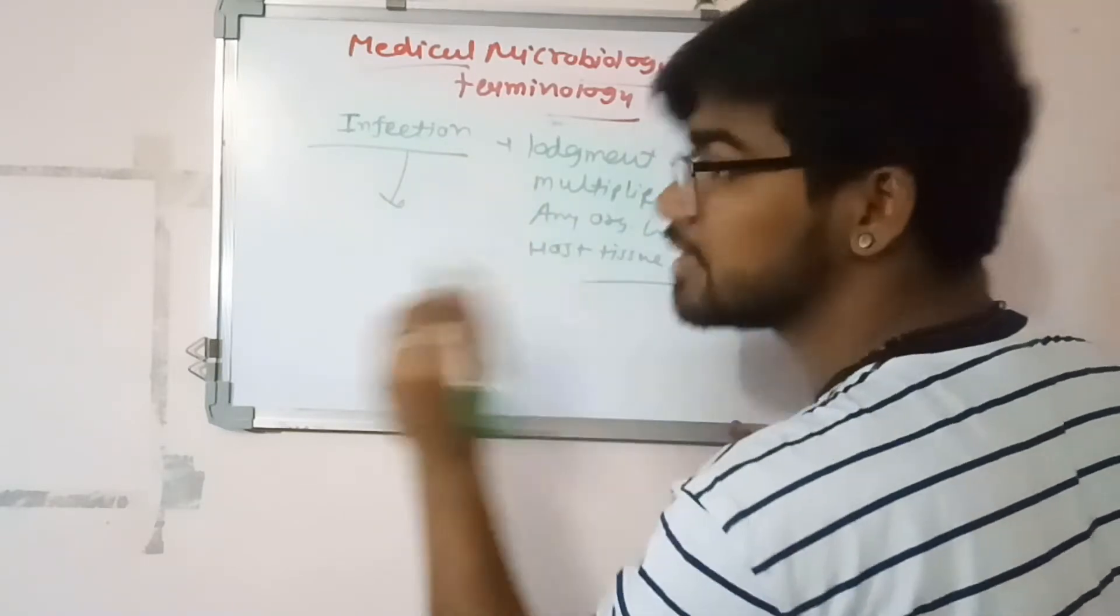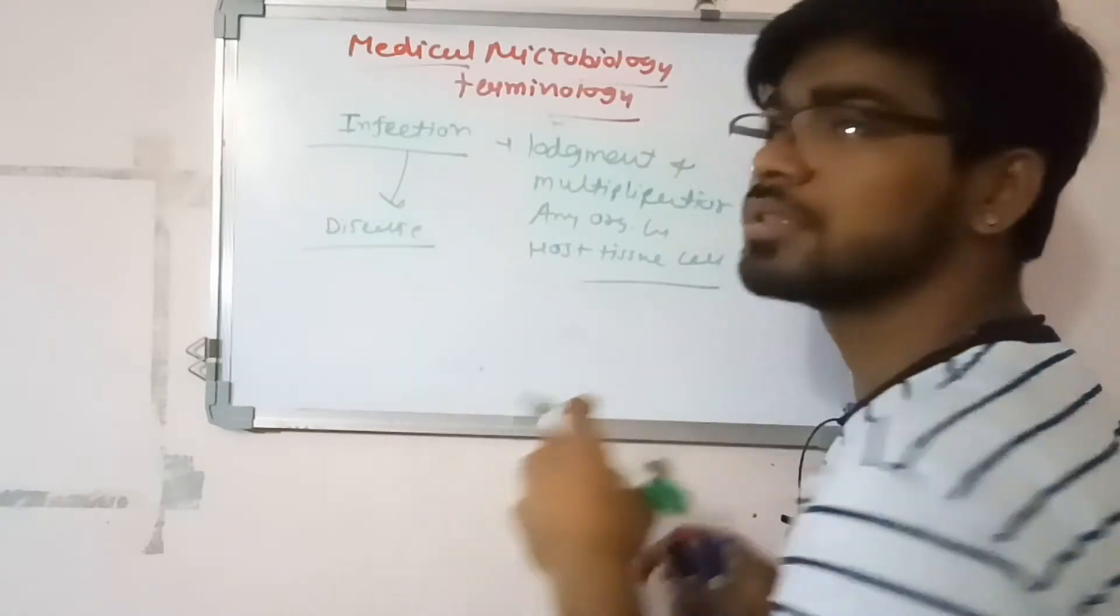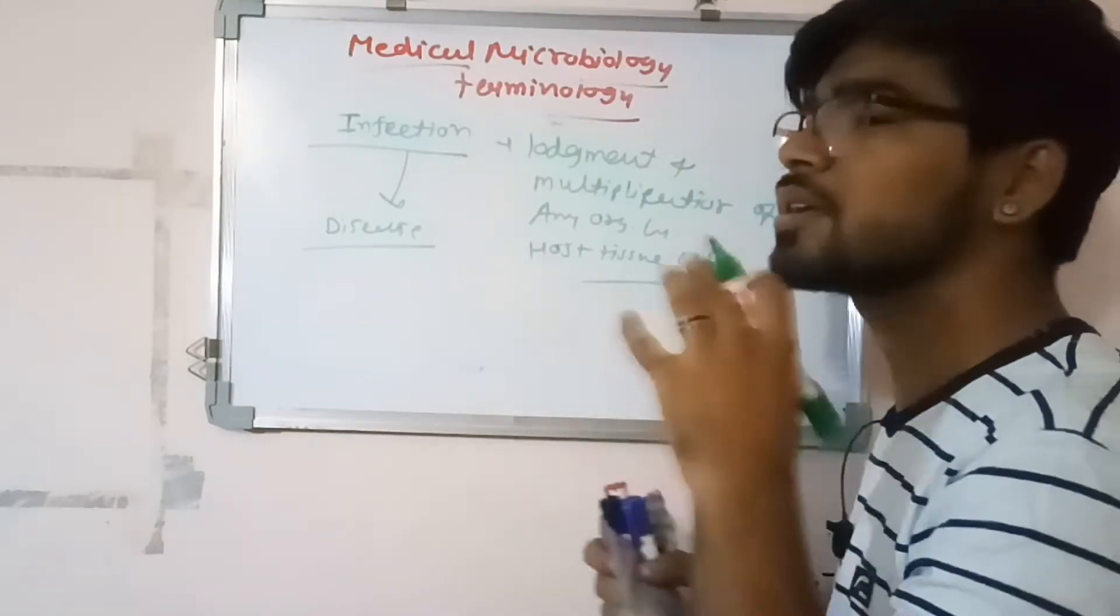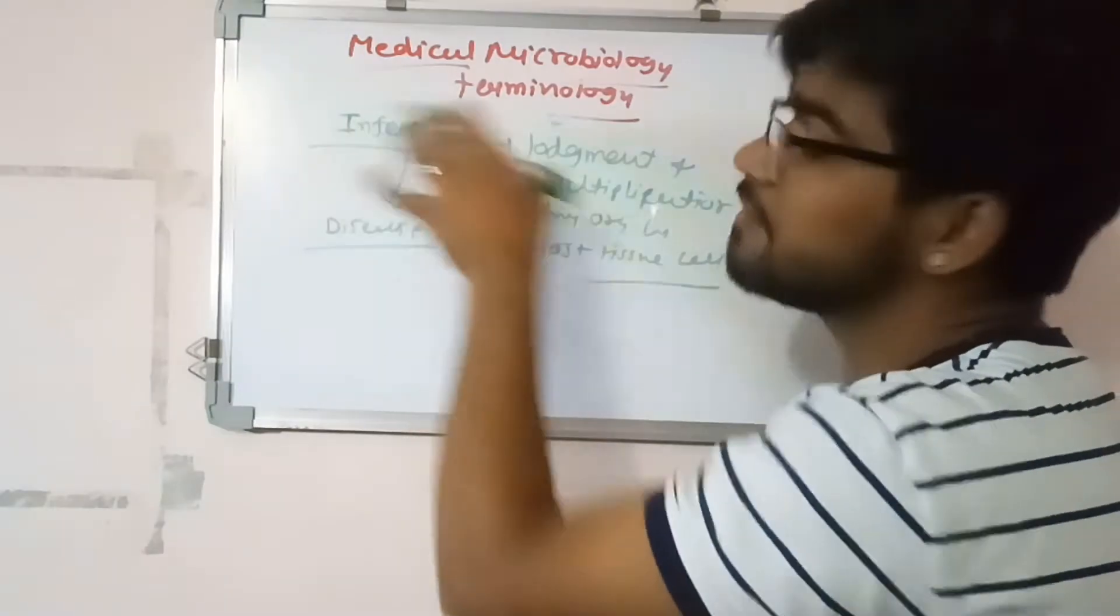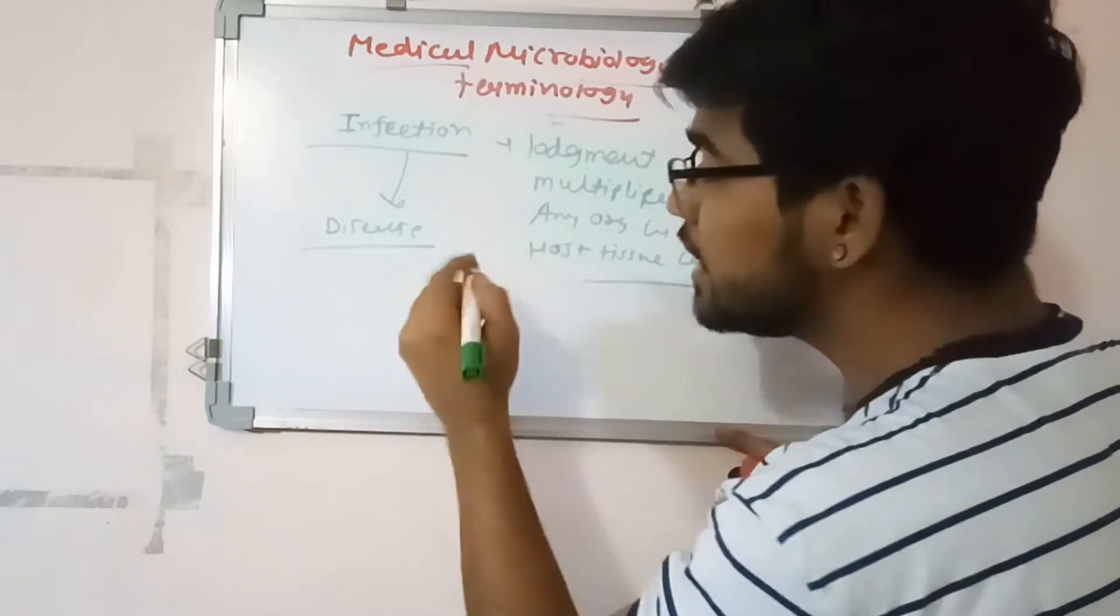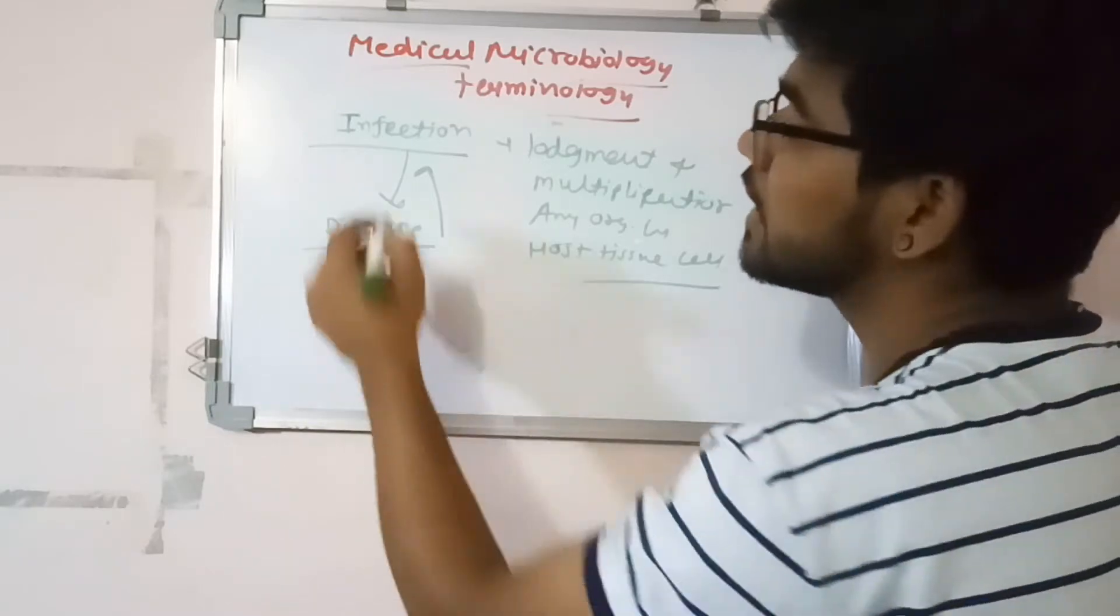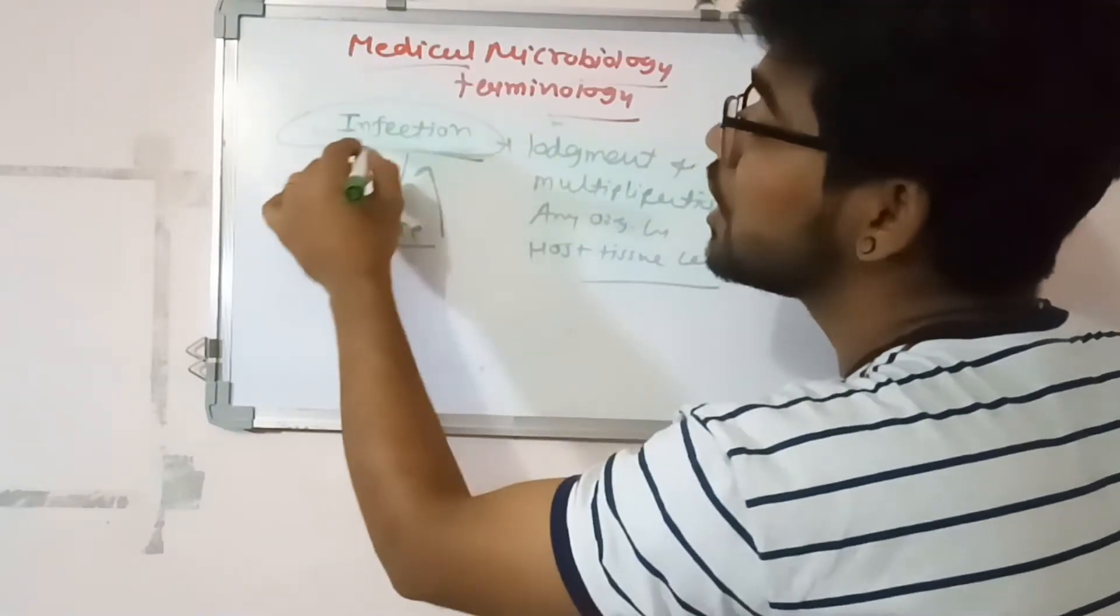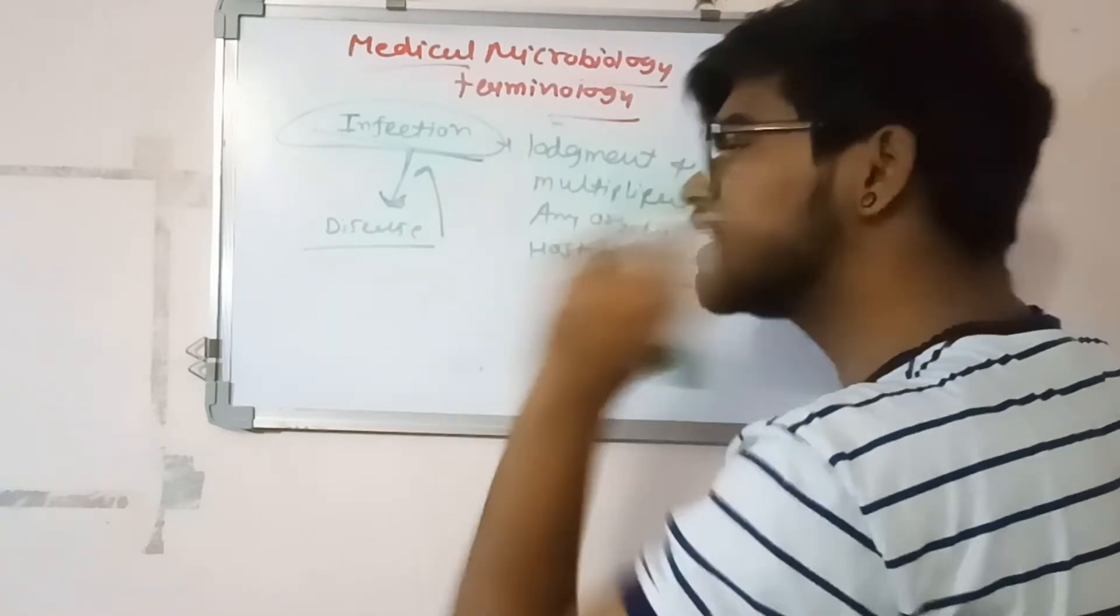Because millions of organisms touch us, they infect us, but they cannot result in disease. But in disease condition, always infection is found. So vice versa is possible - in infection, there is not always a result in disease, but always in disease there is an infection.